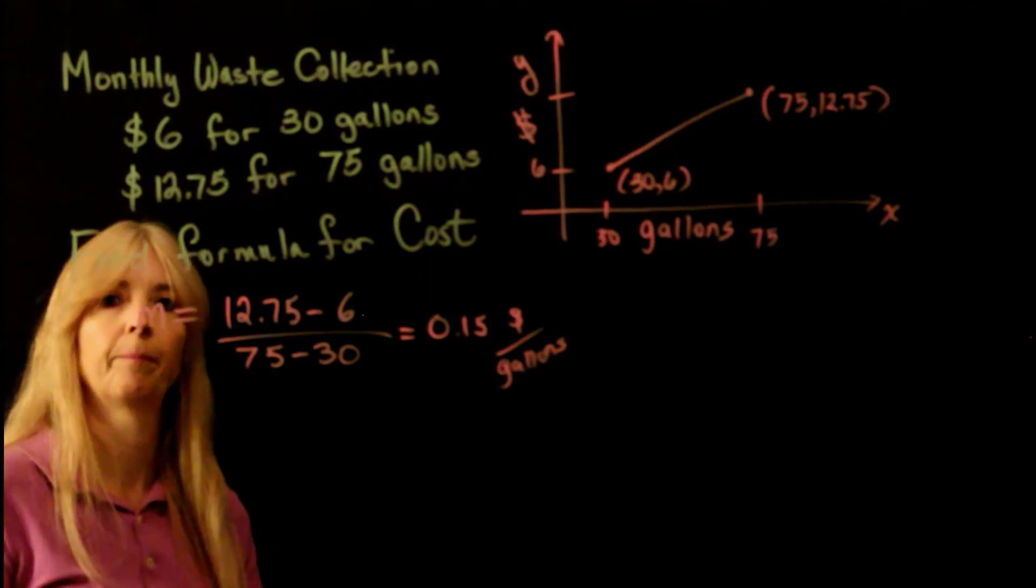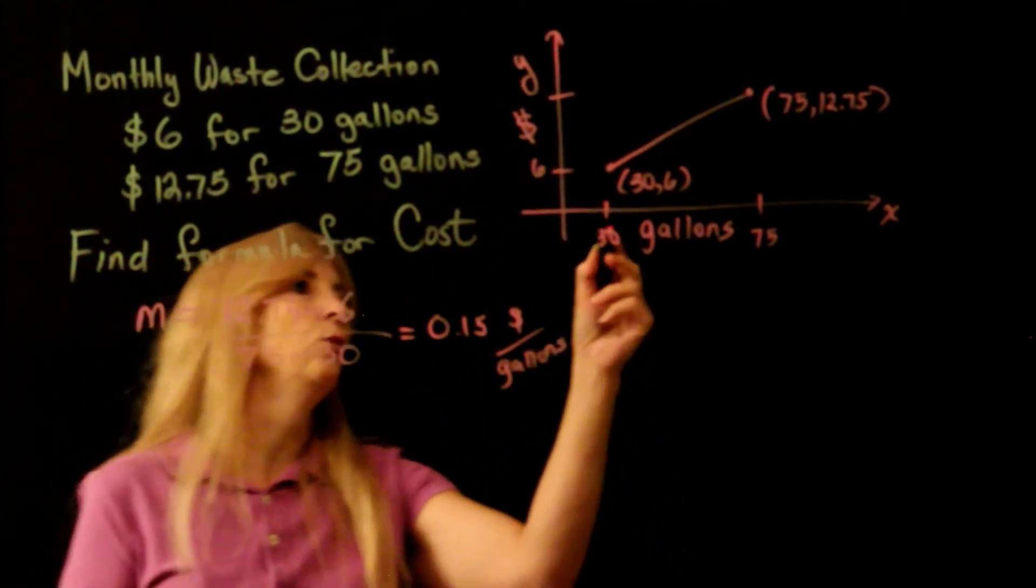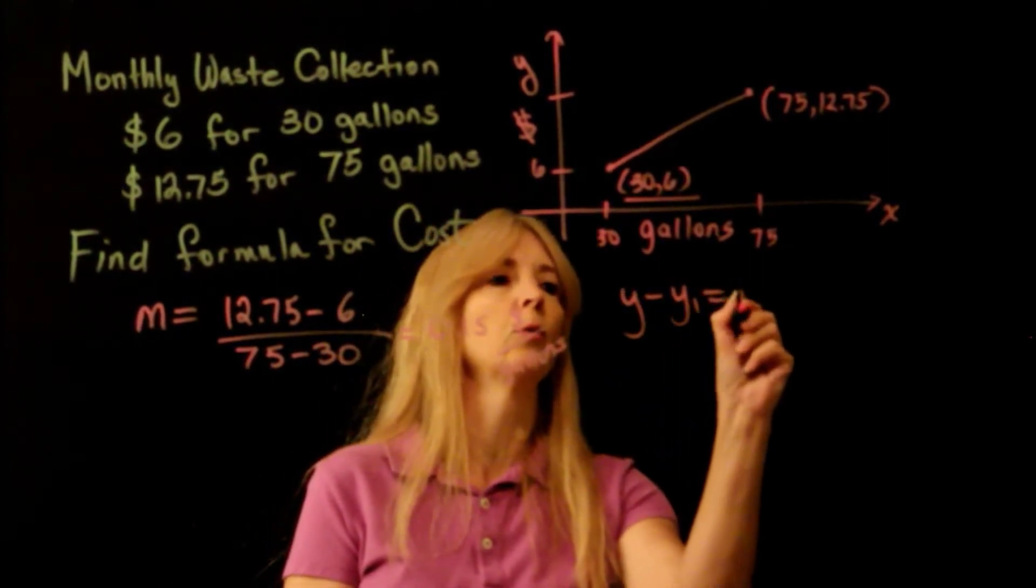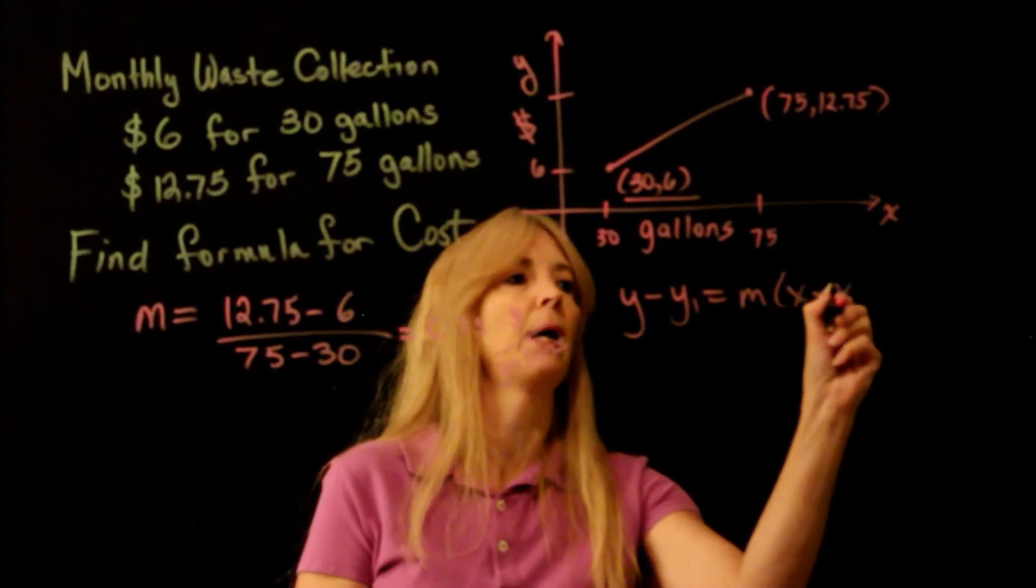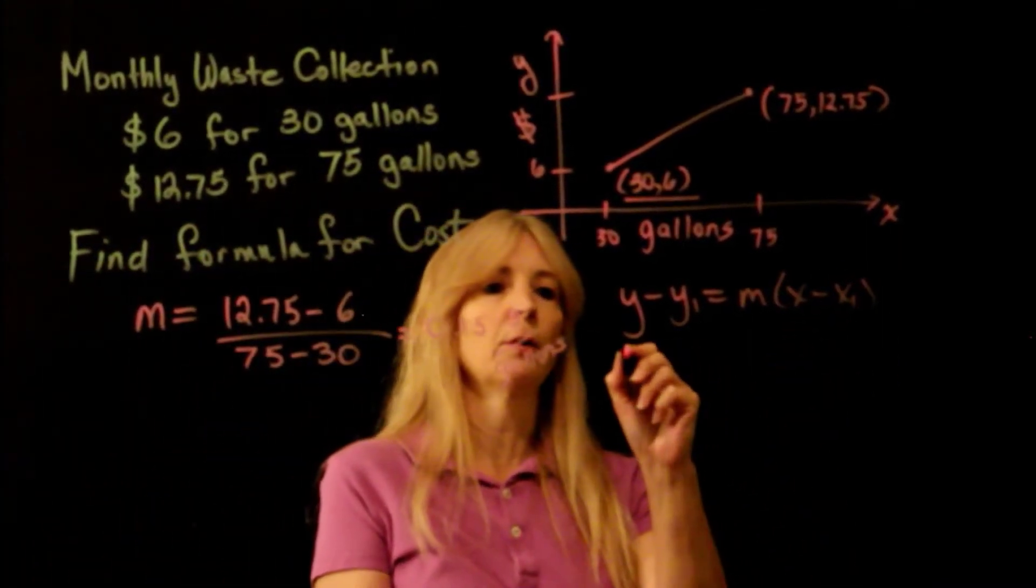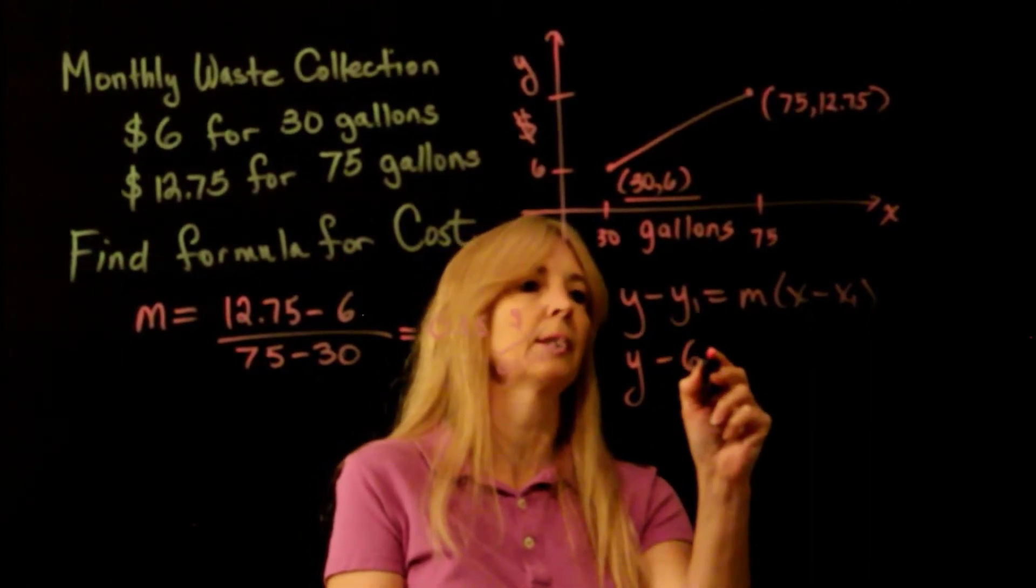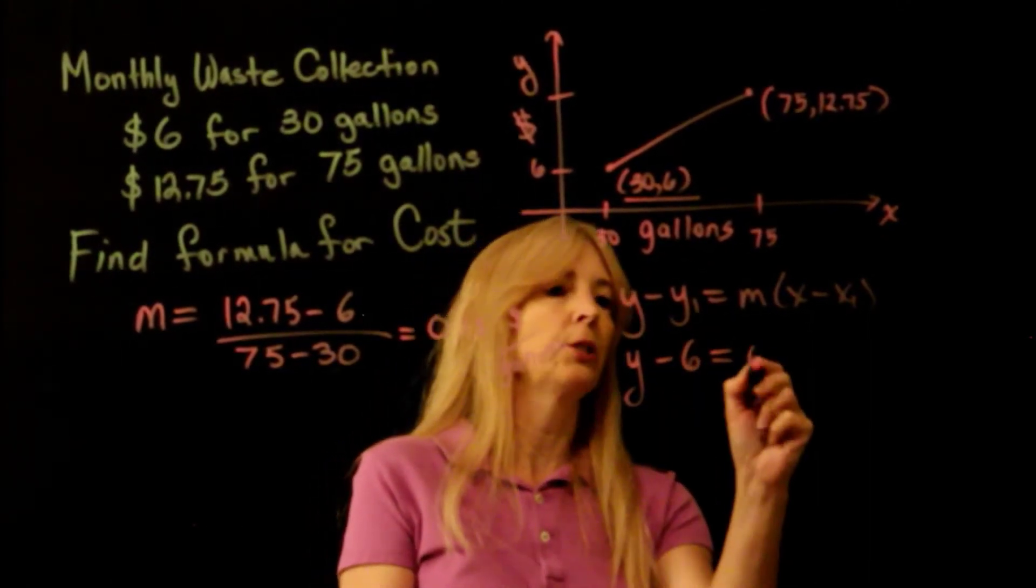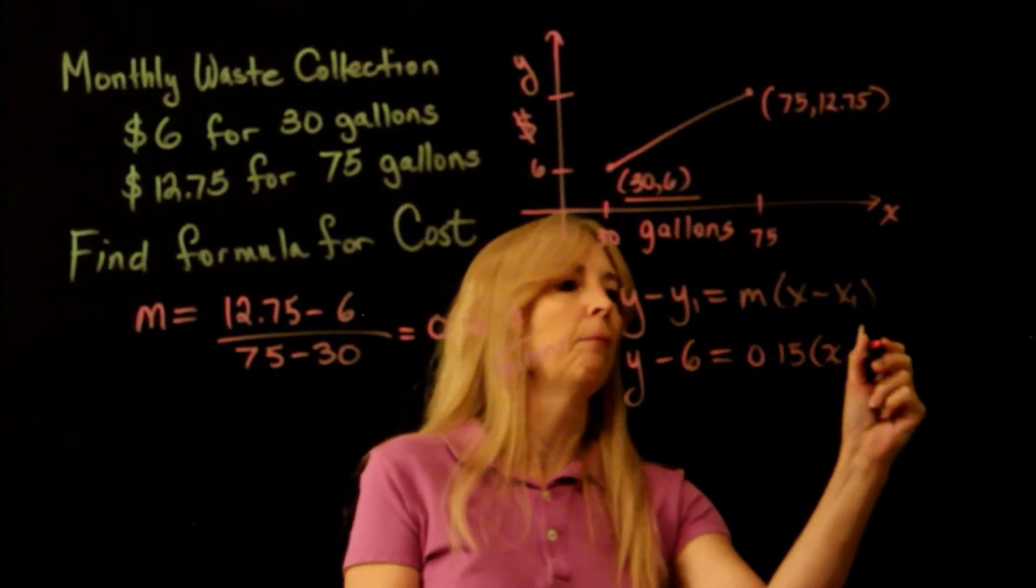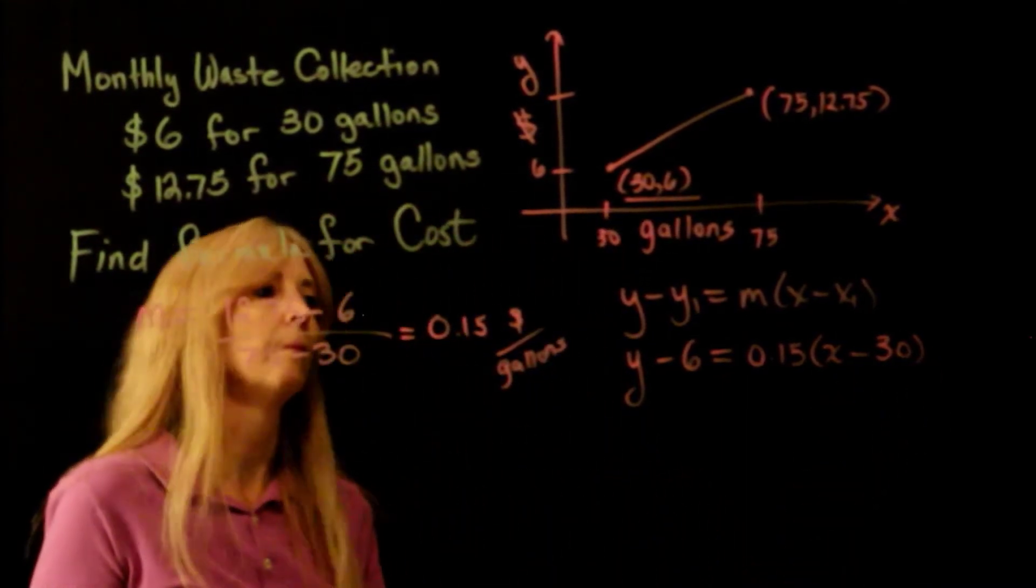All right, so I have my slope. I have a point. I can use, say, this one to plug into my y minus y1 equals m times x minus x1. And from here I'll plug in this point, so my y1 is 6, my slope I just found is 0.15, and then my x is 30.